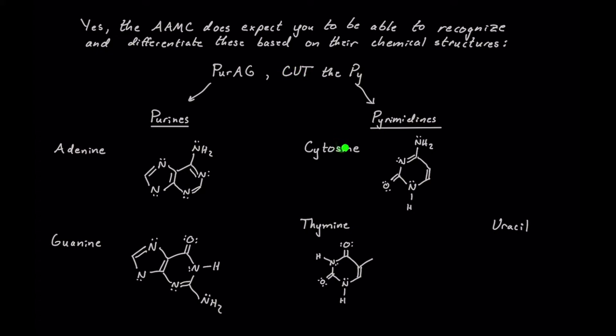Purines are two-ring structures, as we can see with adenine and guanine. They are very similar to each other, differing mainly in some functional groups at specific atom positions, but very similar overall. Pyrimidines, on the other hand, are single-ring structures.